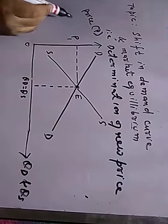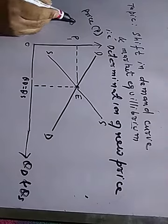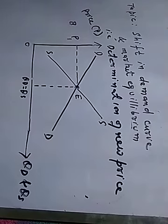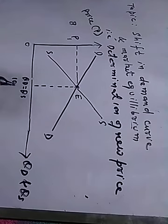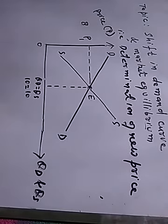In our example, price is equal to 8 rupees, and demand equals supply — demand is 10 and supply is also 10 units. Suppose the good in our example is a pen.